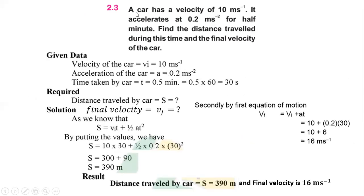Next we have exercise problem 2.3. A car has an initial velocity of 10 meters per second. It accelerates at 0.2 meters per second squared for half a minute. Since we are not told this is the velocity after a certain time, this is the initial velocity: VI = 10 m/s. Acceleration A = 0.2 m/s². Time is half a minute, which is not a standard unit, so we convert it to 30 seconds.